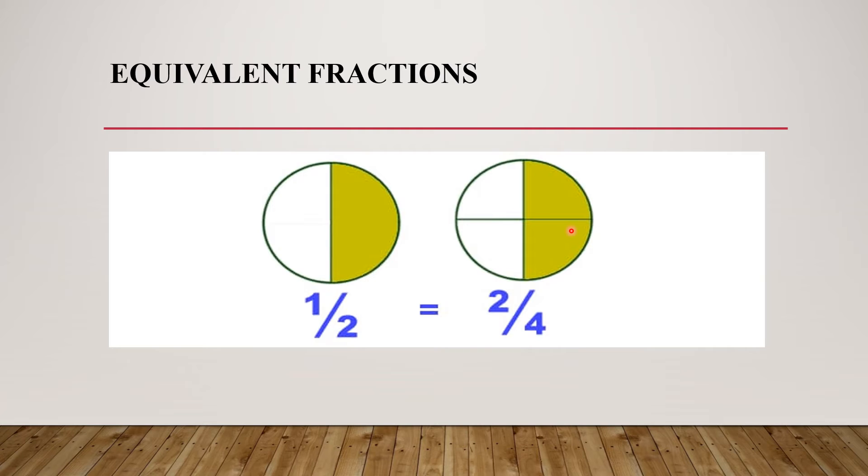With the help of the diagram you can make out they are equivalent fractions. Again, when you will divide this by 2, that means numerator is divided by 2 and denominator is divided by 2, you will get 1 by 2.